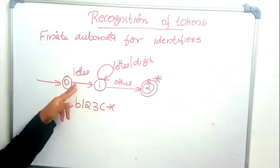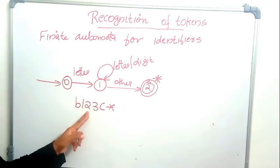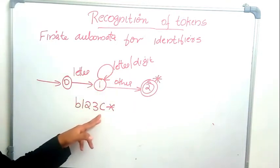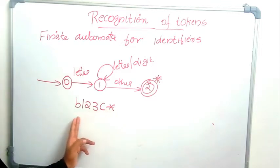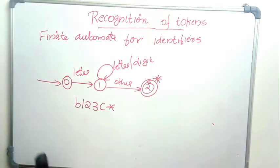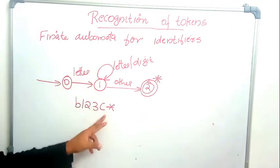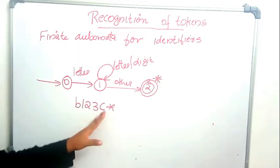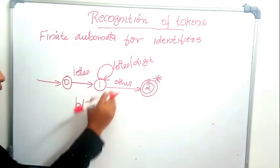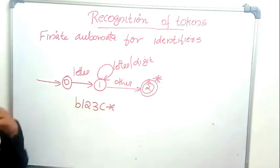'b' is a letter so we reach state one; '1', '2', '3' are digits so we stay at state one; 'c' is a letter so we stay at state one. When we read a character that is not a letter or digit — such as a star — we move to the final state and return the identifier token with its attribute value. The extra character is retracted so it can be treated as the beginning of the next token.